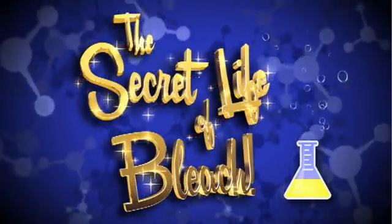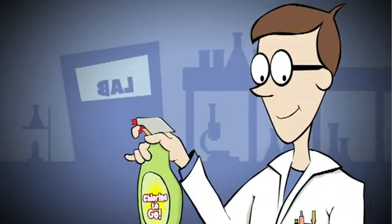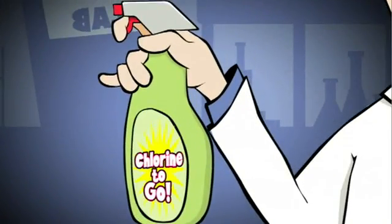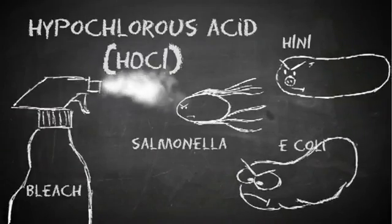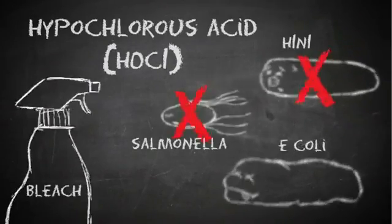The Secret Life of Bleach. You know bleach as an all-purpose disinfectant—all the germ-busting power of chlorine in a handy container. Bleach unleashes a form of chlorine that is a major problem for germs like E. coli, salmonella, and flu viruses.